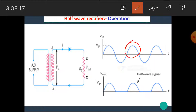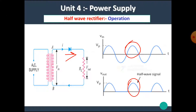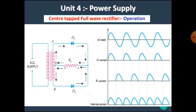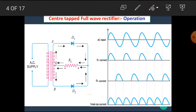Again, when the positive half cycle appears, this diode becomes forward biased and output appears across the load. I hope you all understand the operation of half wave rectifier. Now let's see the operation of center tap full wave rectifier.